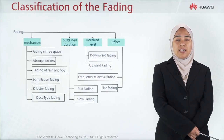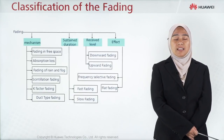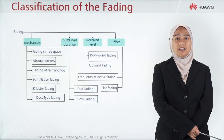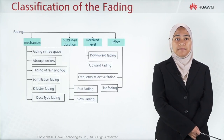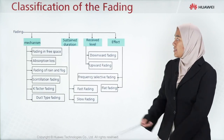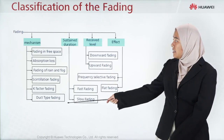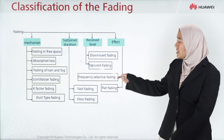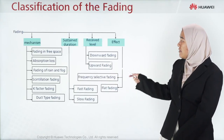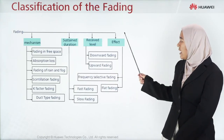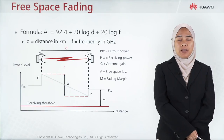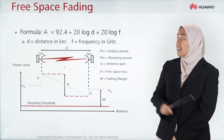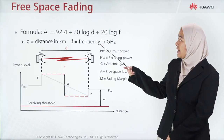The classification of fadings — these are the types of fadings that occur in the atmosphere and weather. As you can see, these are the mechanism, the sustained duration, receive level, and the effect. The free space fading formula is given as shown here.